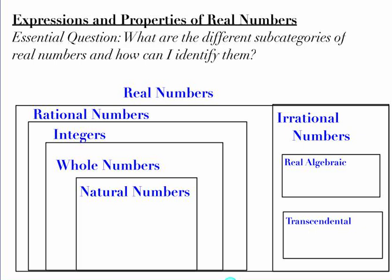We're going to start inside with the natural numbers. Natural numbers can be represented by the symbol N with two little lines. Natural numbers are known as counting numbers — a note to yourself: counting numbers. These are the numbers we use to count with: 1, 2, 3, and so on.